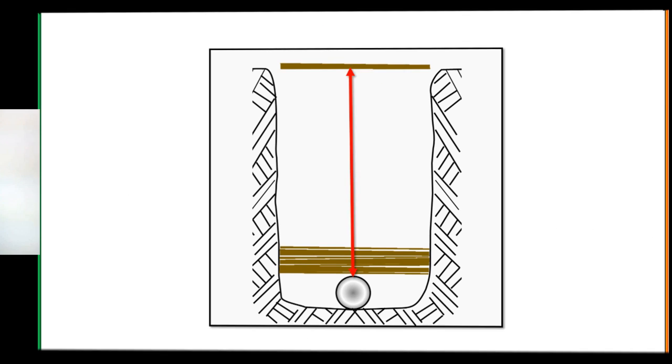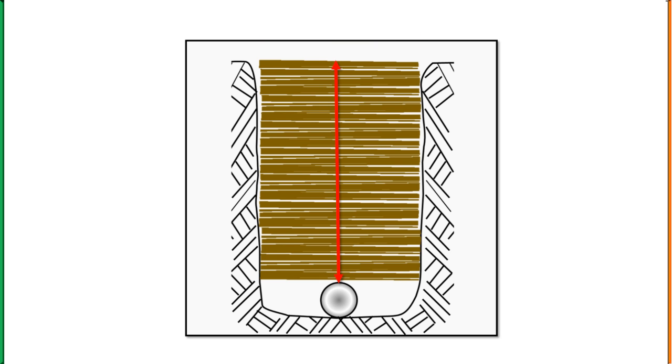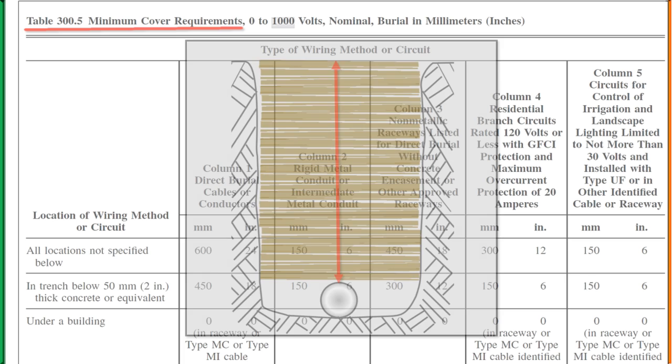This right here is cover over the top of that pipe. When we dig a ditch or trench and put our pipe in it, this is our cover from the top of the pipe to finish grade. You might need to bury your pipe deeper than you would normally think in order to get your minimum cover requirements over the top of the pipe. And that's what this table applies to.